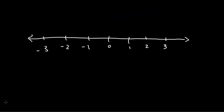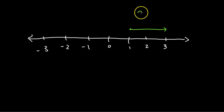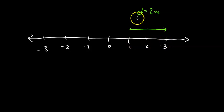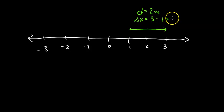Let's say we travel from position 1 all the way to position 3. The distance traveled is 2 meters — we count 1, 2. The displacement is the change in position: the final position is 3, minus the initial position is 1, so we also get 2 meters. When you are moving in the same direction and don't change direction, your displacement will be the same as your distance, assuming you're going in a straight line.